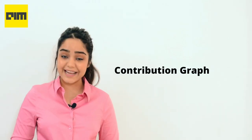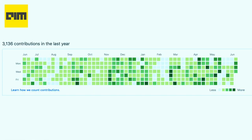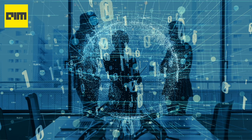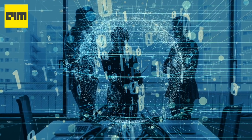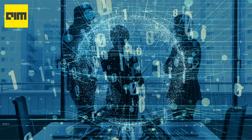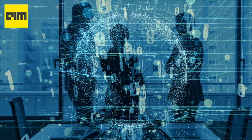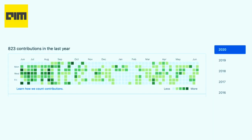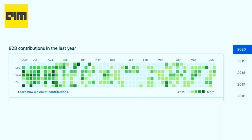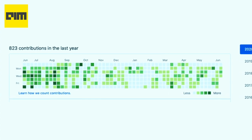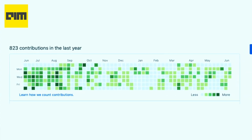Moving on to the next step: the Contribution Graph. This indicates the number of contributions that a developer has made on other projects on the site. It showcases your keenness to explore other areas and shows activity levels in the coding community. The greener the graph is, the better your contribution rate. Therefore, it is always advisable to keep exploring.